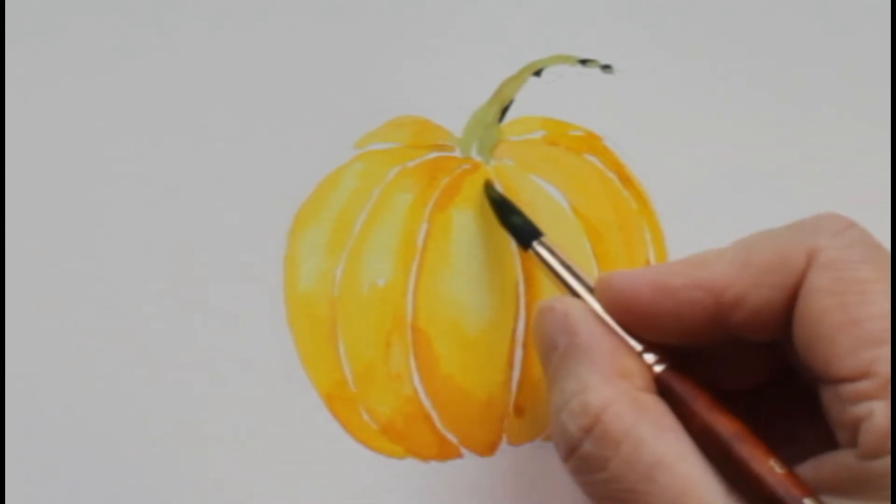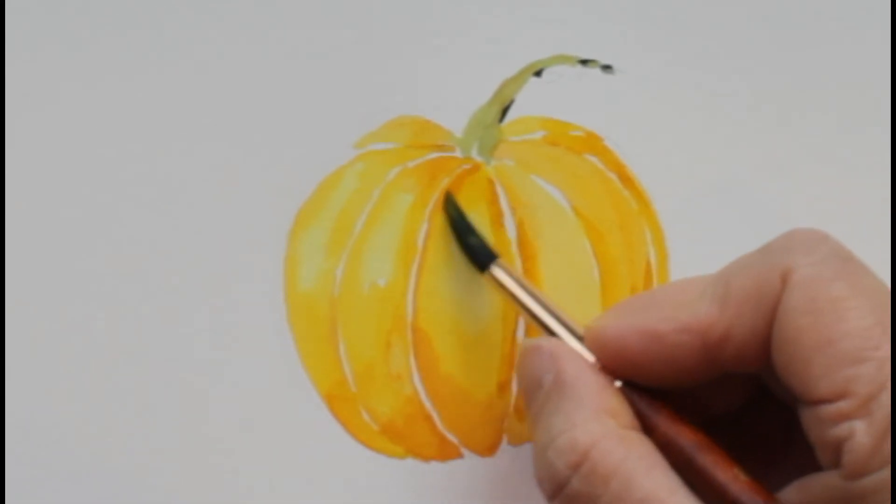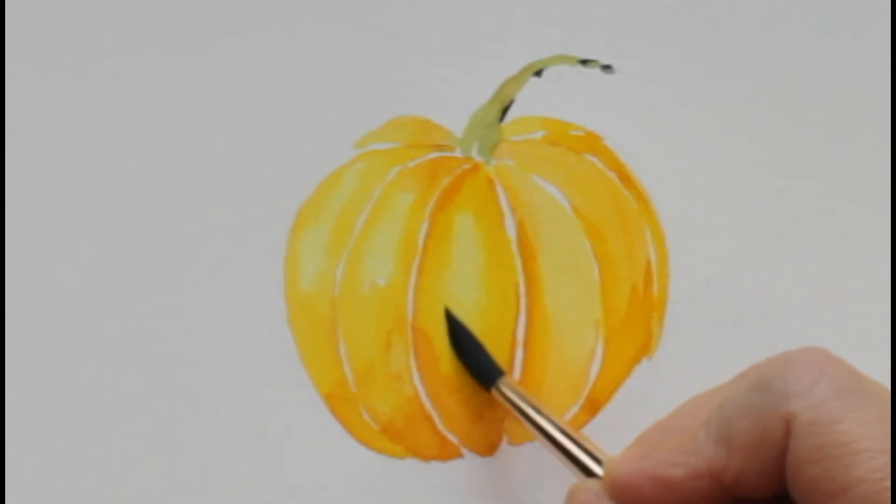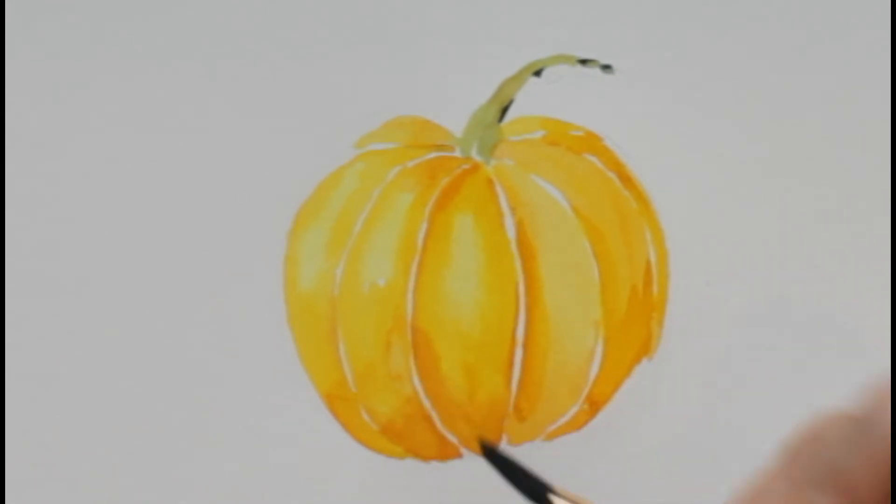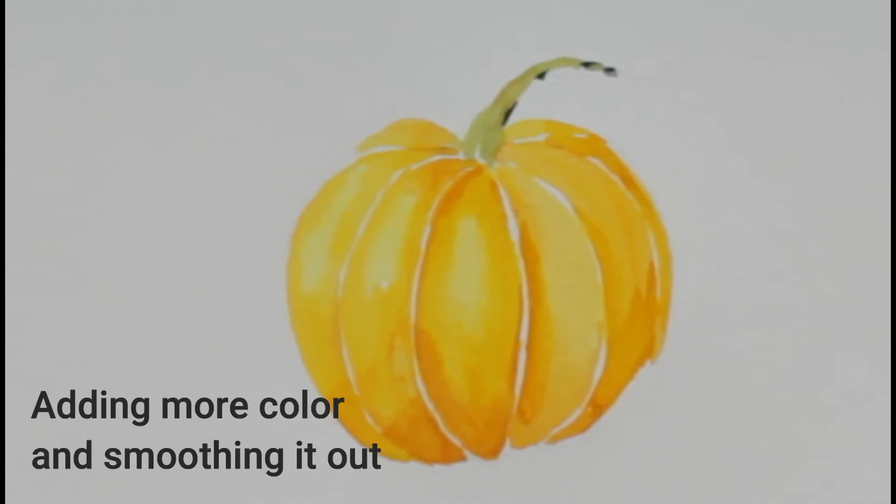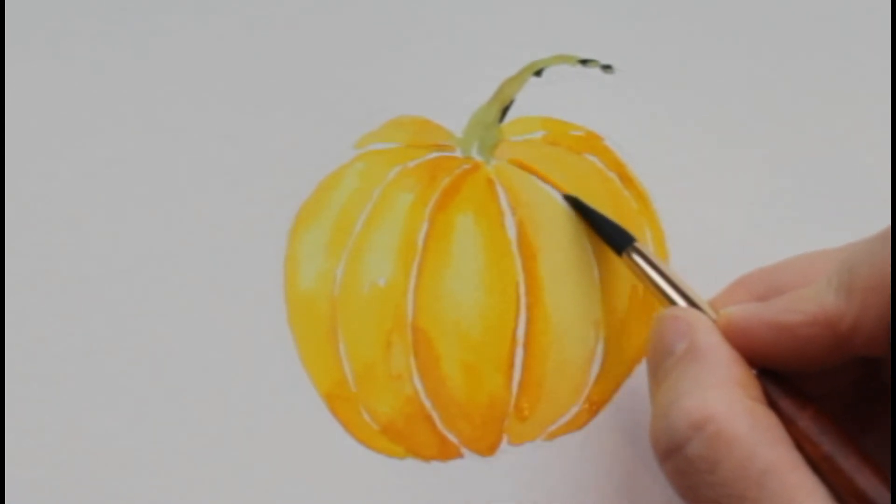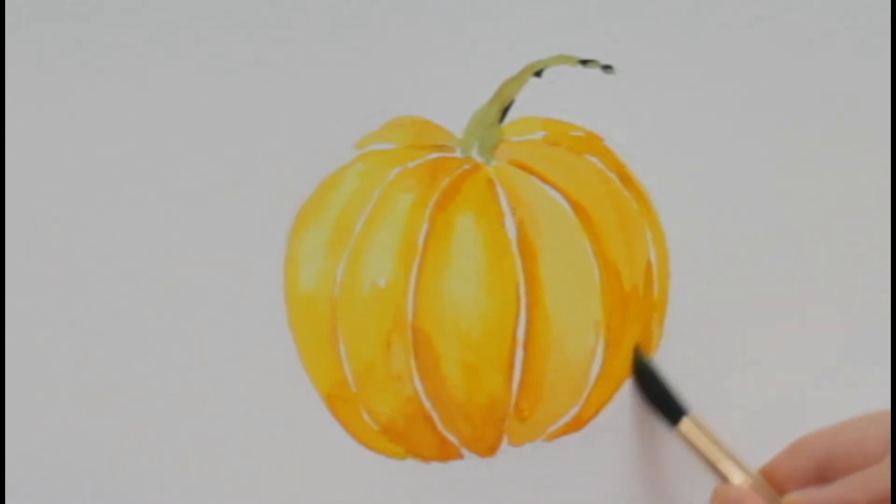My brush has just a little bit of water on it when I'm doing this smoothing. Too much water and you'll just make a mess. Not enough water, you'll be picking up color instead of smoothing it out. Adding more shadows in.